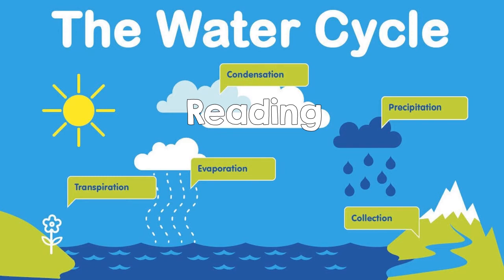Now, let's listen to the second reading. Passage: The Water Cycle. Water covers most of our planet. It can be found in oceans, lakes and ponds, and in the ground itself. The cycle of water from liquid to vapor to solid is called the water cycle. The water cycle is an exciting and continuous process with no beginning and end. The water cycle is the movement of water in the environment by evaporation.